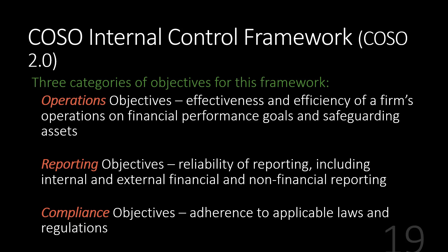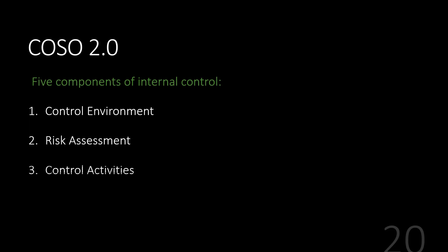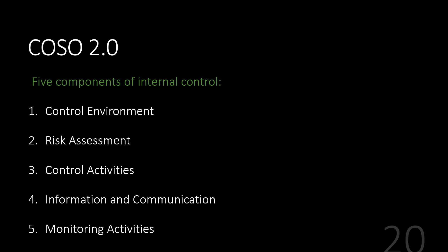Those are the three categories. You'll see them generally shown as one dimension of the COSO cube, which we'll see in just a minute. COSO 2.0 also has five components of internal control, and you can see these in detail in the text: the control environment, risk assessment, control activities, information and communication, and monitoring activities.